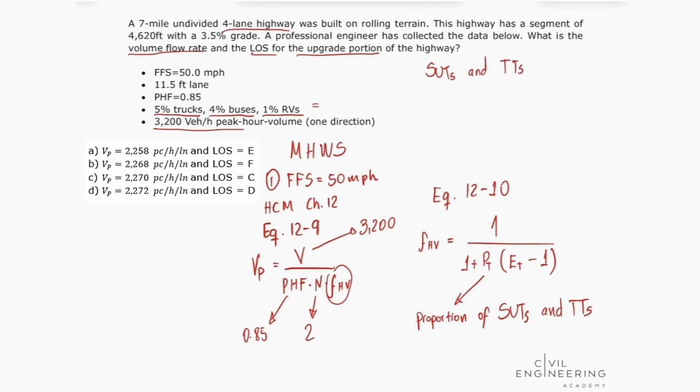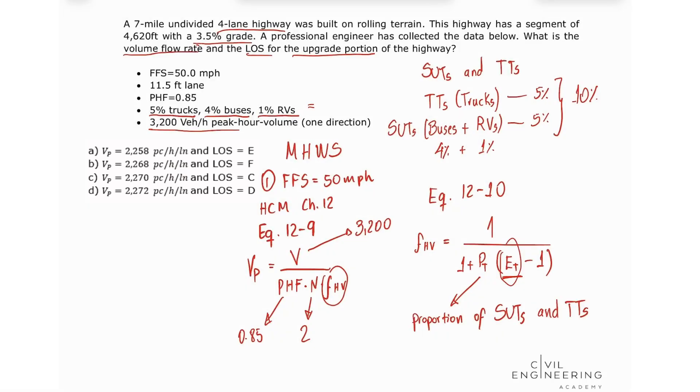So our TTs would be our trucks, and in this case we have 5% of trucks. And our SUTs are represented by our buses and RVs. In this case we got 4% buses and 1% RVs, so 4% buses, 1% RVs. We have a total of 5%, and these together are 10%. So we need to put this P sub T in decimal, so our P sub T is equal to 0.1.